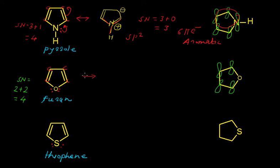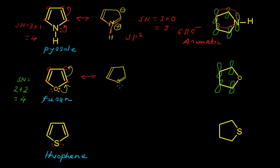So we draw the resonance structure for furan. One lone pair present on oxygen gets delocalized, giving a negative charge on this carbon atom. The resonance structure of furan has the existing double bond remaining as it is, with one new double bond written here, one lone pair of electrons with a positive charge on oxygen, and a negative charge on this carbon atom.